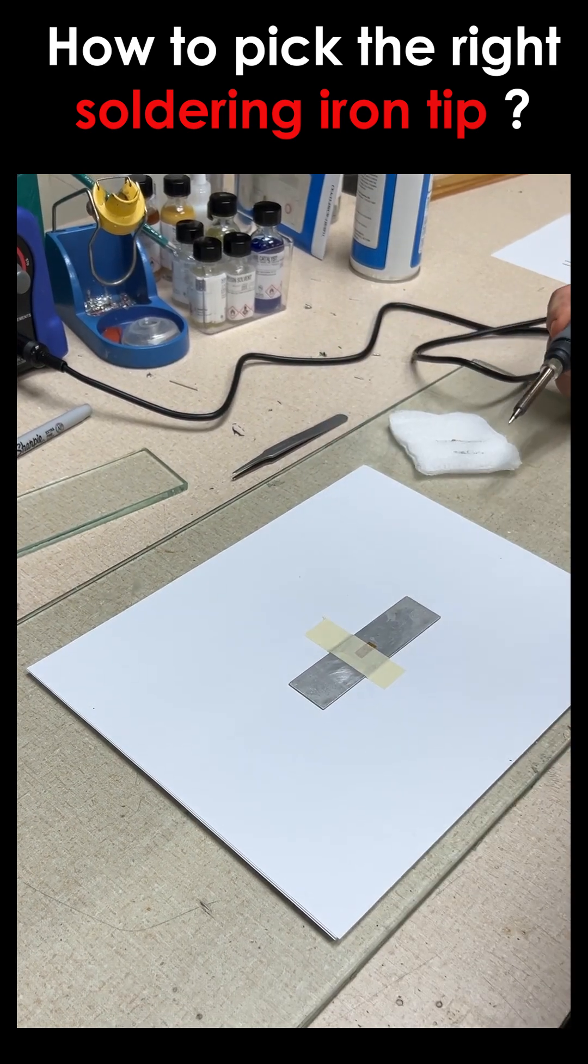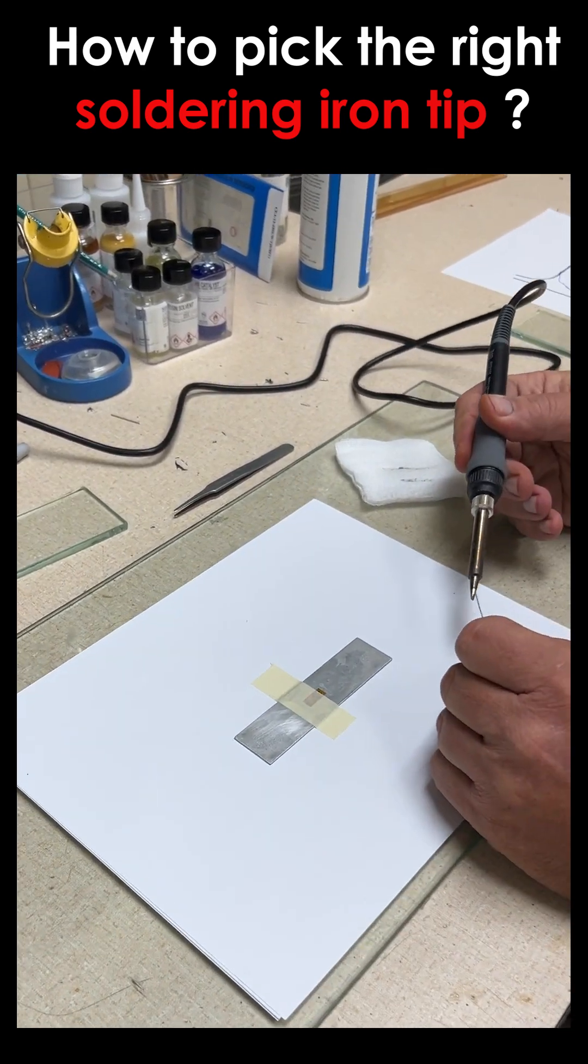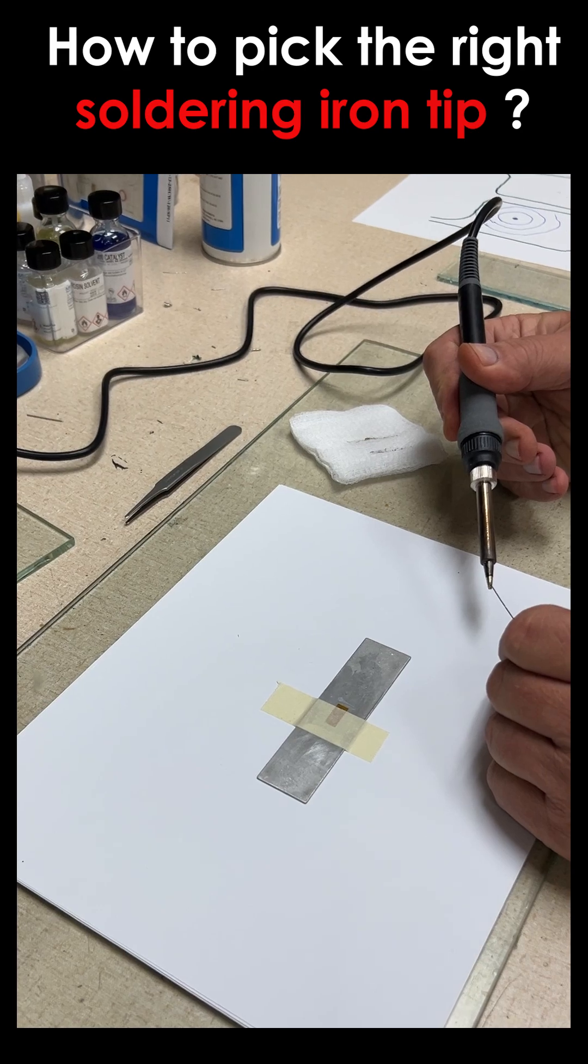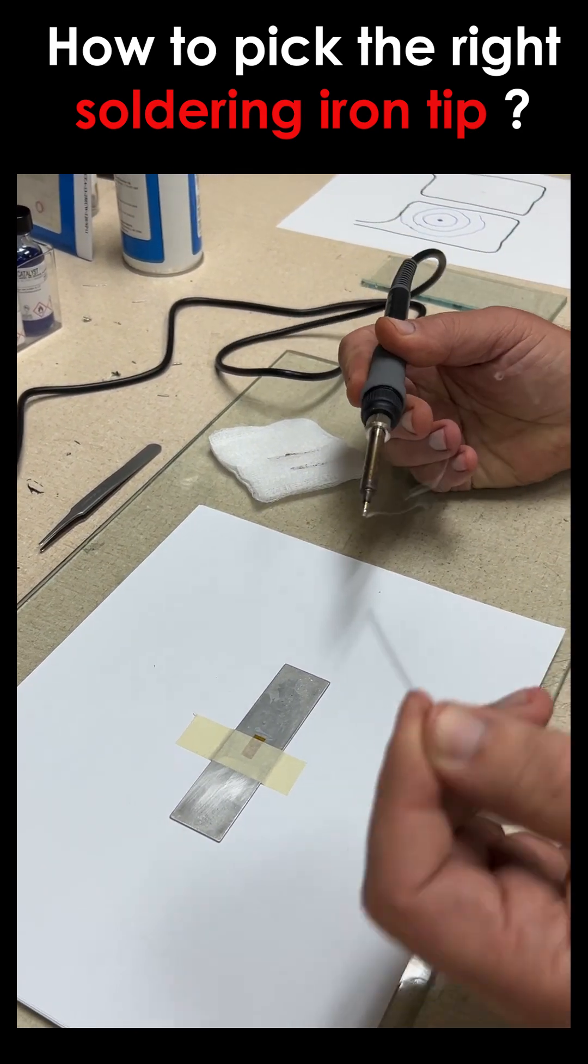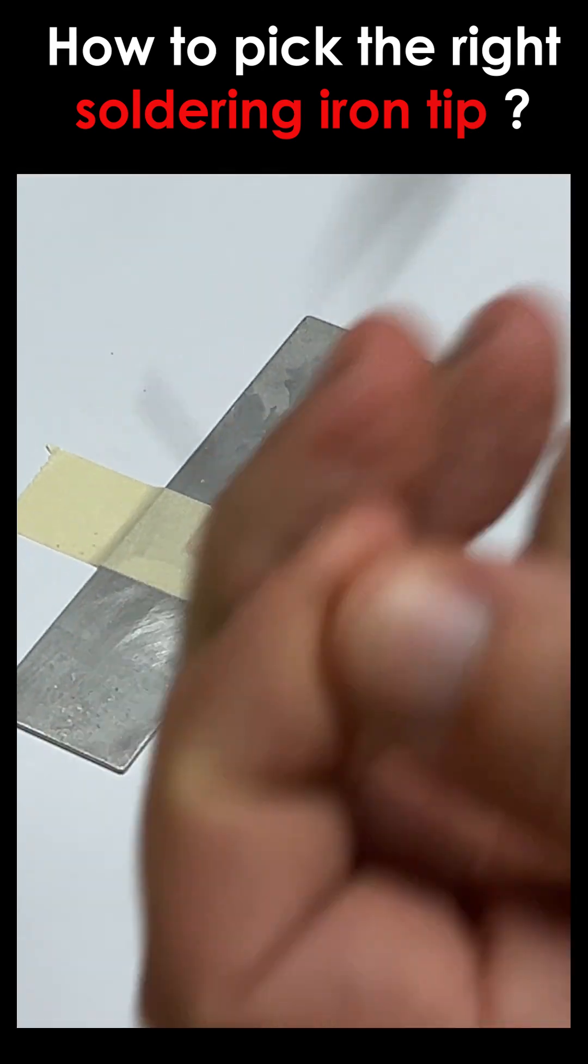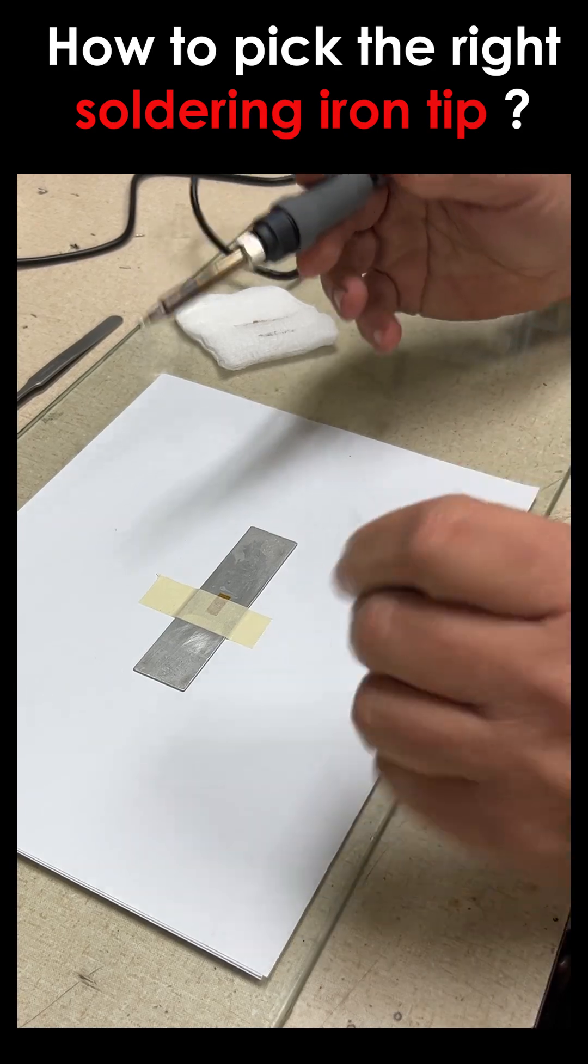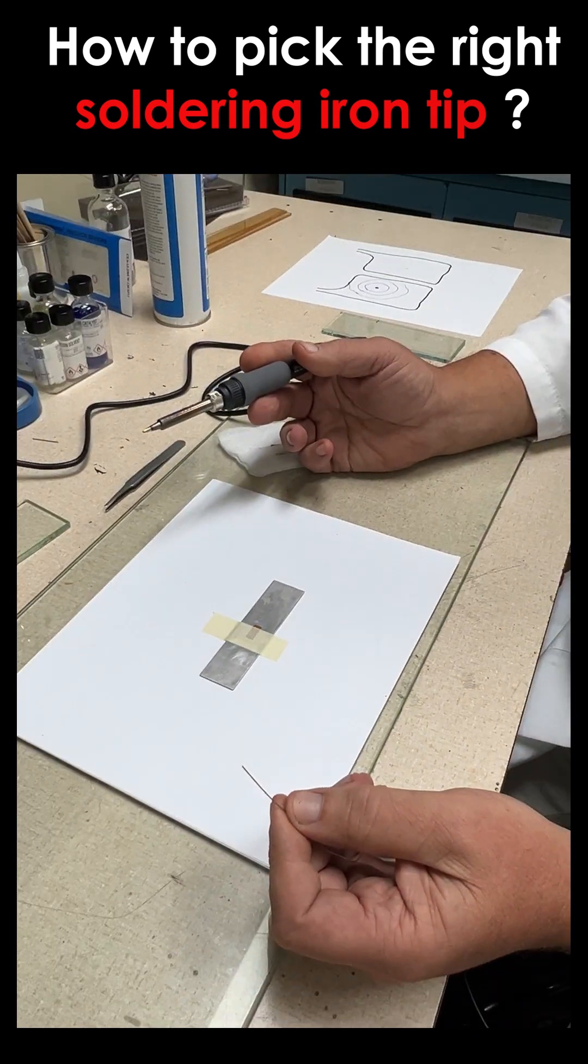Okay. Per our advice, typically we're going to clean the tip, lightly tin the tip. By the way, this is a rosin core solder. So we do have flux in the solder. Don't necessarily need to use any external flux.